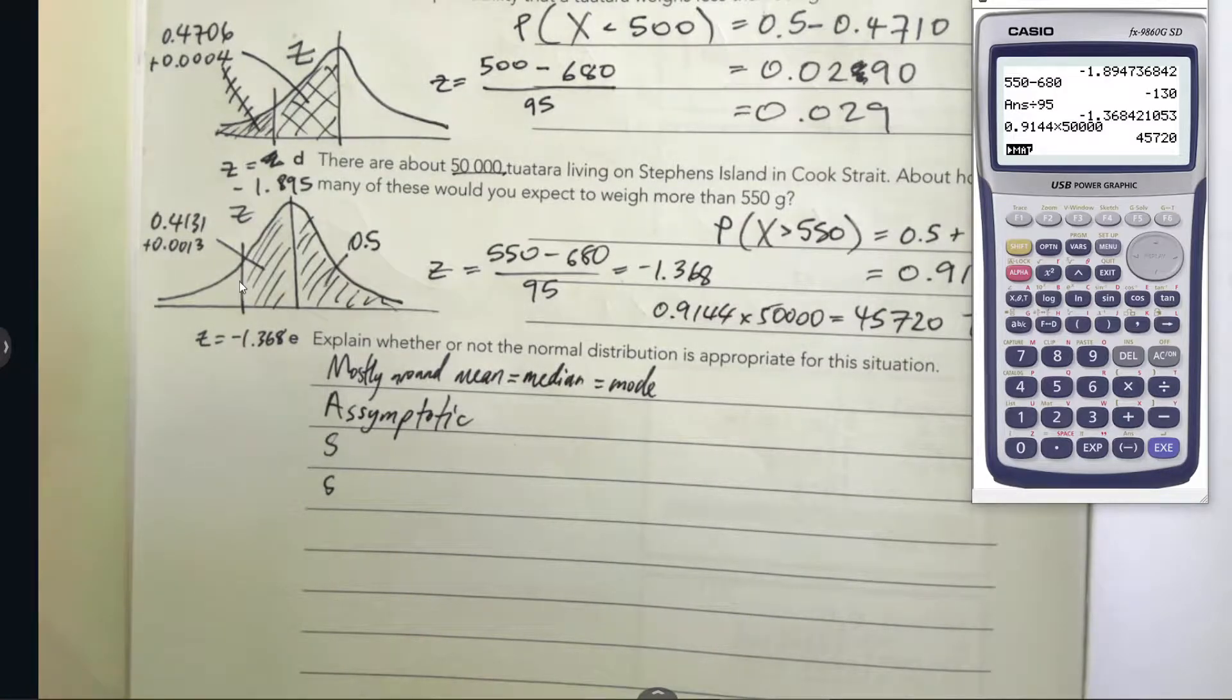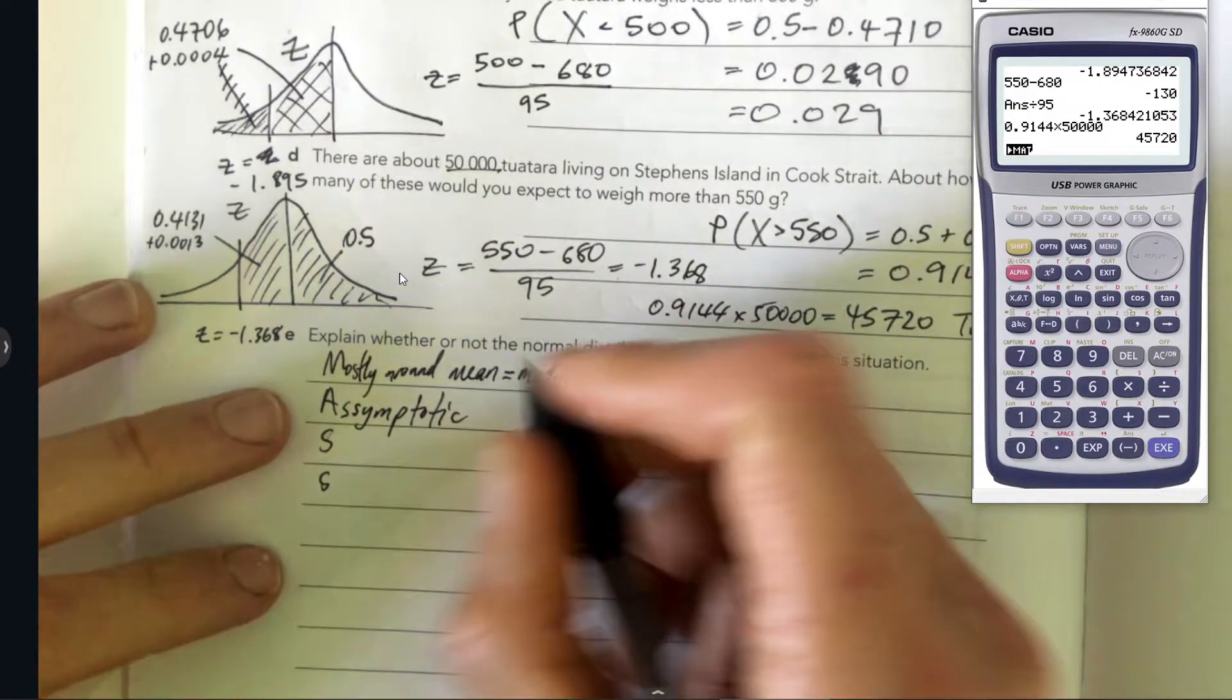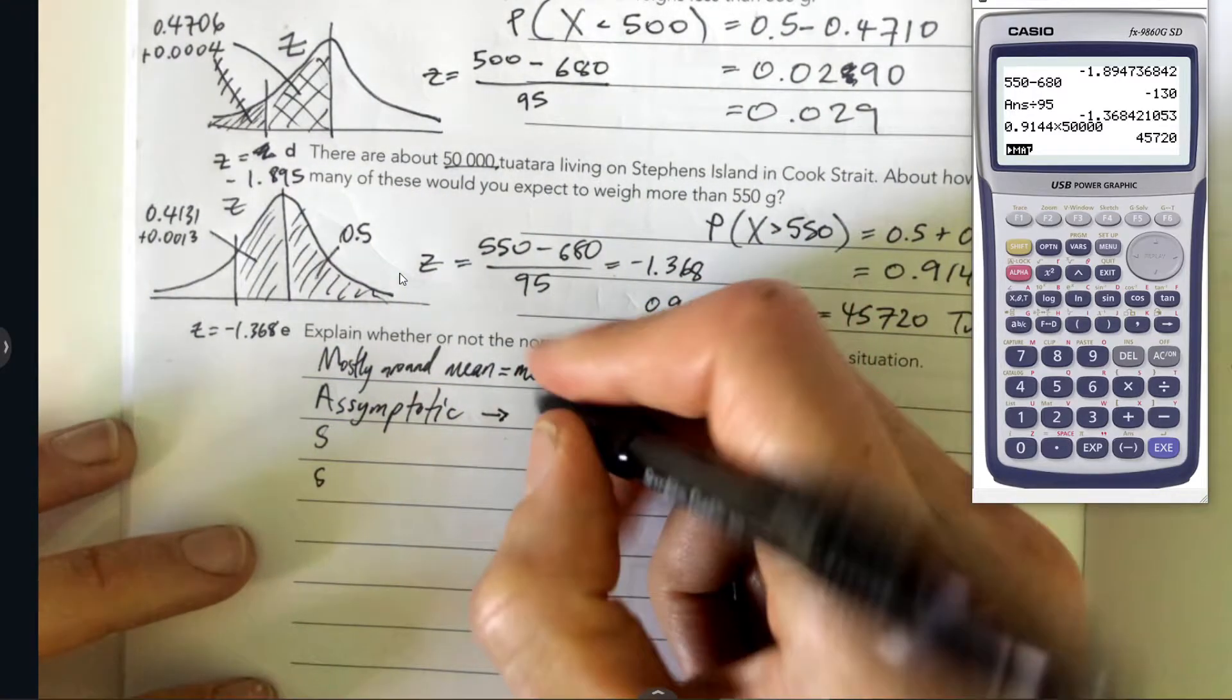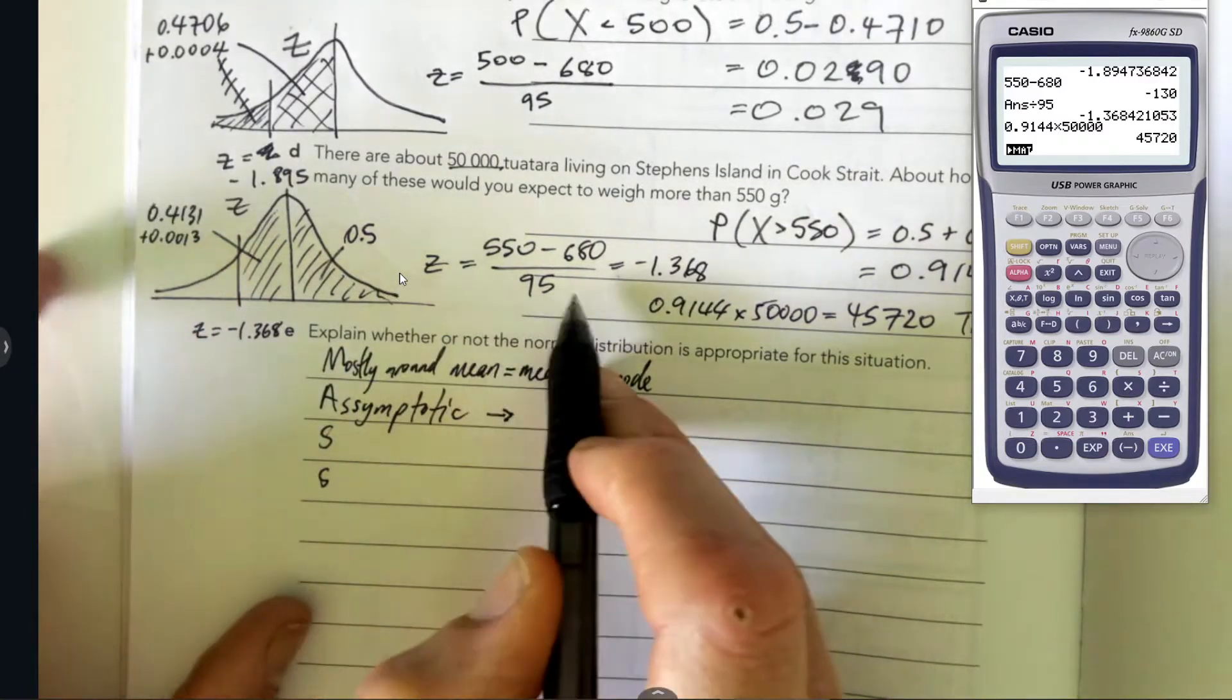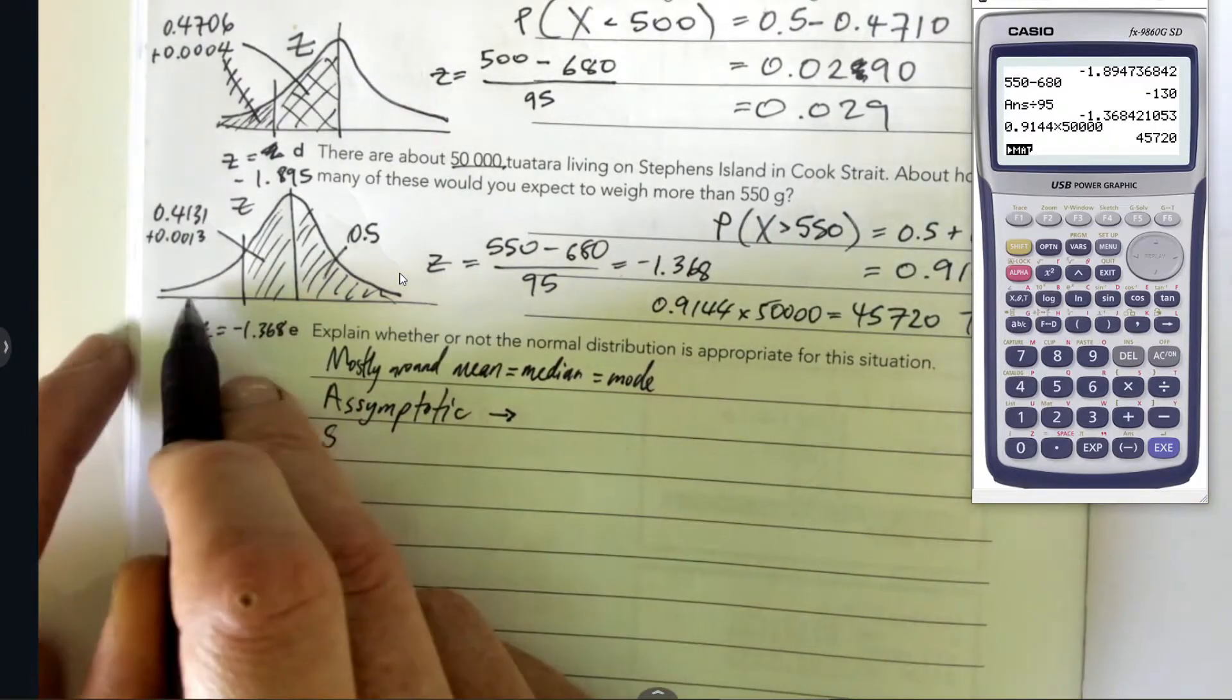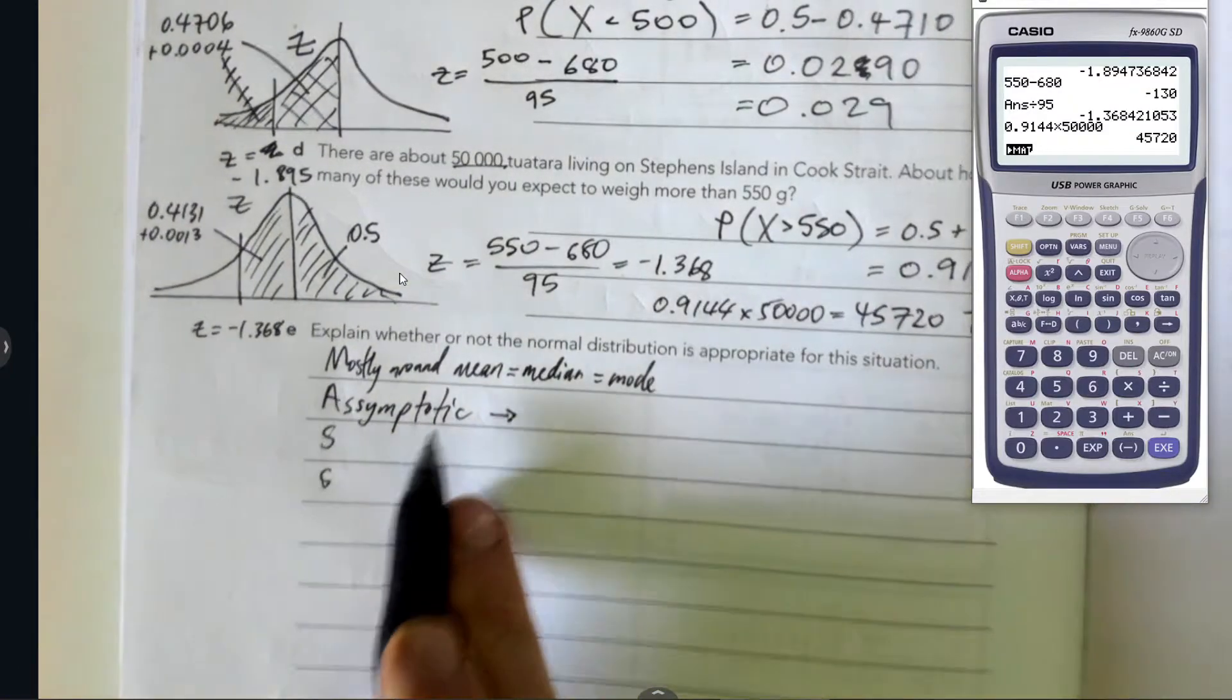A is asymptotic. See how all the times I draw my normal distribution, I never actually touch the line with it? That's because this, for infinity, actually never touches, but it gets so close that the probability or the area underneath the curve is still 1. Asymptotic just means that these tails go out for infinity. So that means you can have a super heavy tuatara, or you still can have these super light tuatara. This is the most failing assumption.